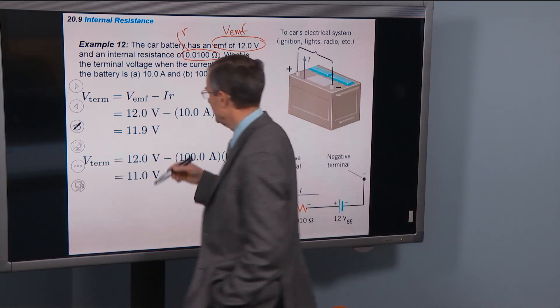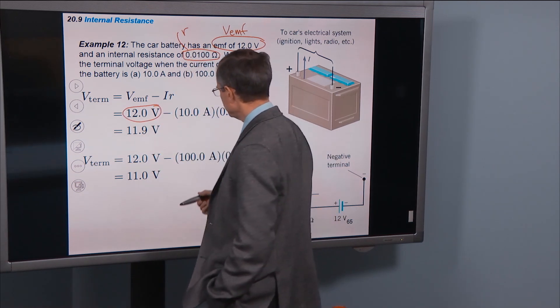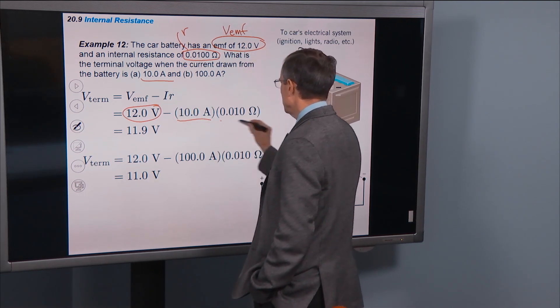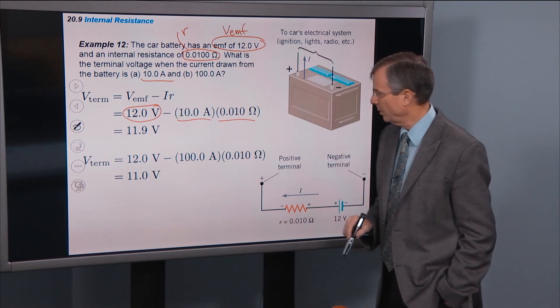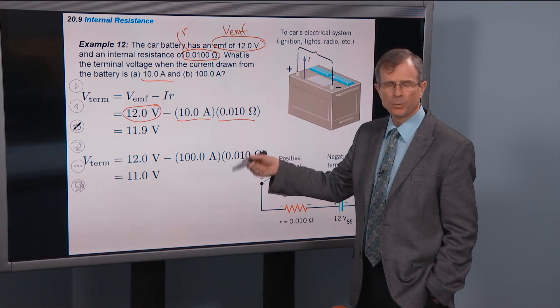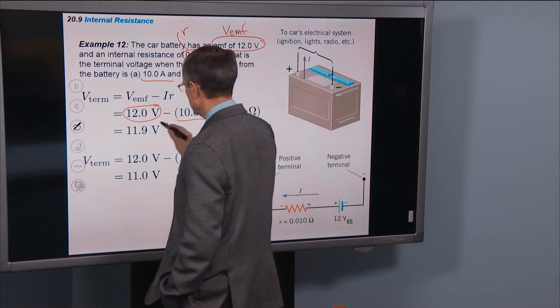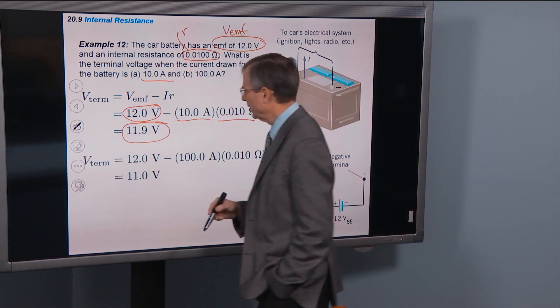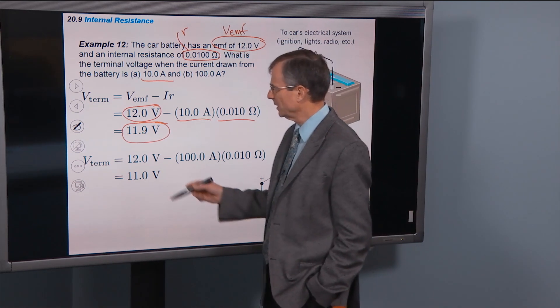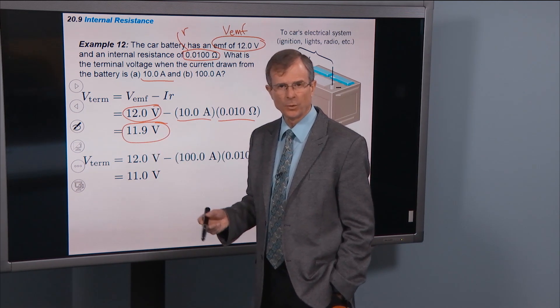Well here's the equation that we talked about. The EMF of the battery is 12 volts. Current is 10 amps in part A times the internal resistance of 0.01. Well 0.01 times 10 is just 0.1. And 12 minus 0.1 is our old friend, 11.9 volts. So with a medium amount of current through that battery, we're going to get a terminal voltage that's very close to the EMF of the battery of 12 volts.